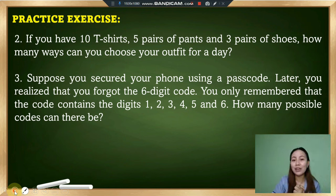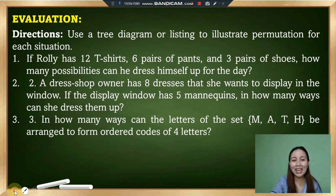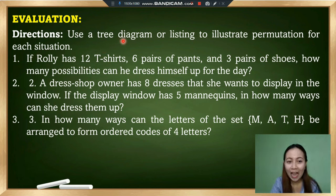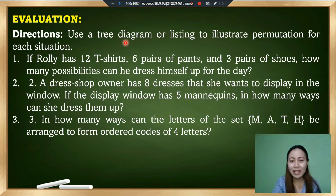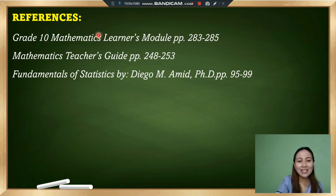After the practice exercise, please answer the evaluation to see whether you learned from this video. Get a pen and paper to answer the evaluation. You will illustrate permutation of objects, but this time using a tree diagram or listing method — either one is fine. Do it on your own and let's see if you really learned from this video.